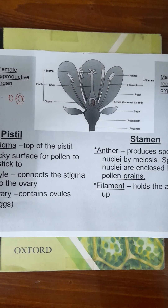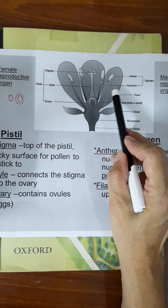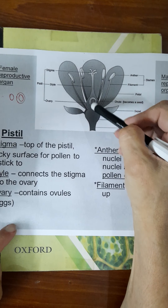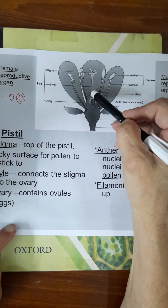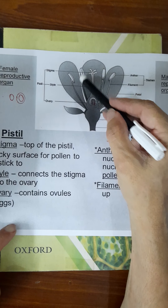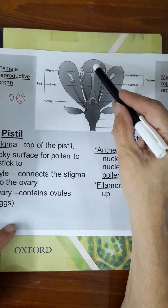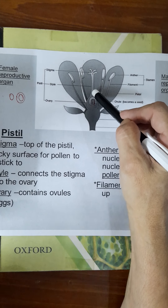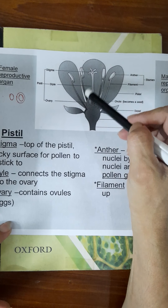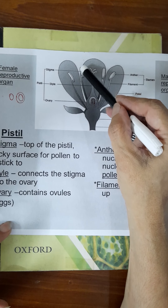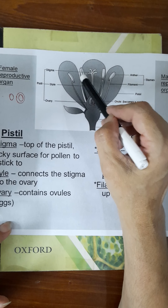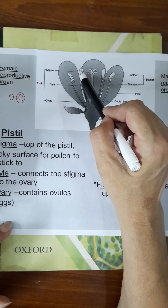A typical flower has four parts: the petals, the sepals, the stamen and the inner part called the pistil or carpel. The stamen is the male reproductive part of the flower and the pistil is the female reproductive part. The stamen consists of two parts: the filament and the anther. The anther contains the pollen grains and pollen grains contain the male cells.